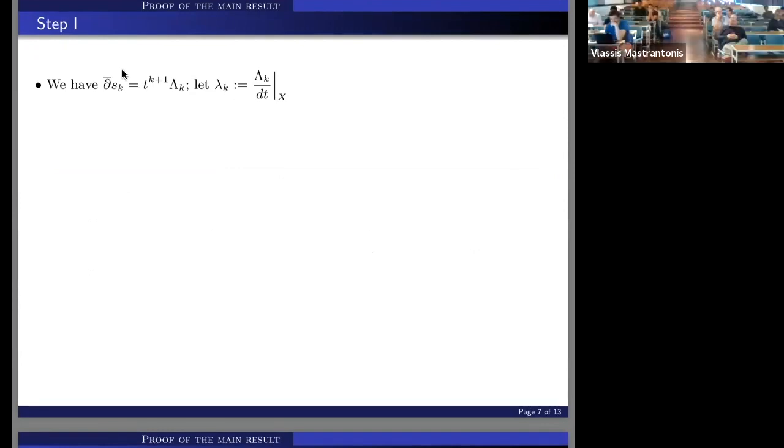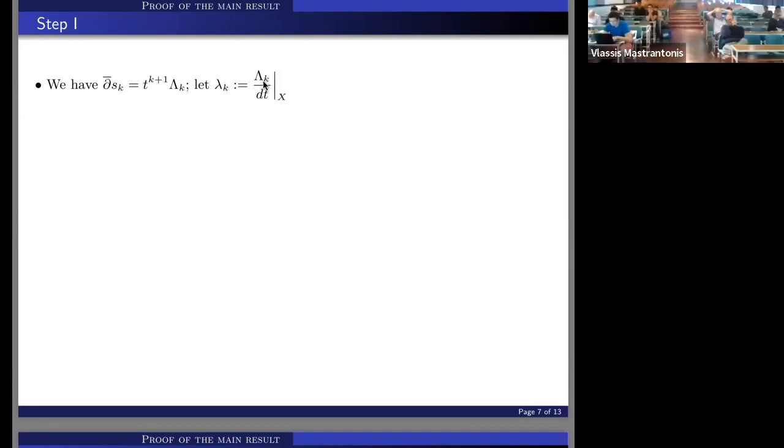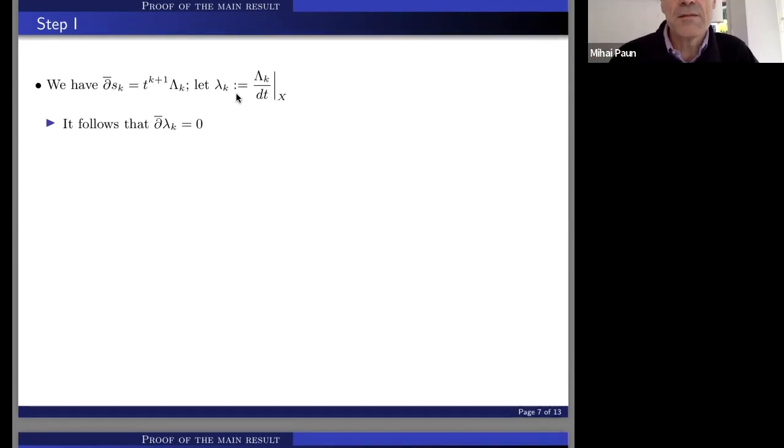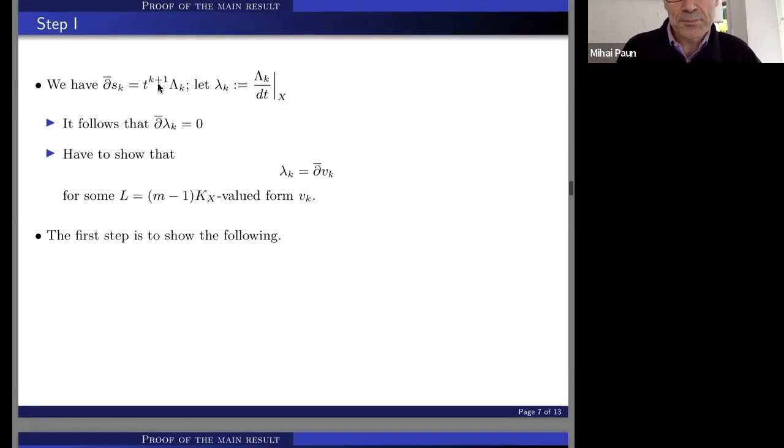So we have at hand this section s_K, which is this multiple of Lambda_K. And we are interested in the restriction Lambda_K divided by dt. So this, I hope the notation is very clear. So Lambda_K is an n plus one, one form. So of course it's divisible by dt. So we take the restriction to the central fiber X. And then given this equation here, what we know about Lambda_K is that it is d-bar closed on the central fiber. And then the conclusion, so what we want to achieve is equivalent to the fact that Lambda_K is d-bar exact. But here we only require this on the central fiber. That's a deep, important difference with respect to the usual setting when we try to solve the d-bar equation on the total space X.